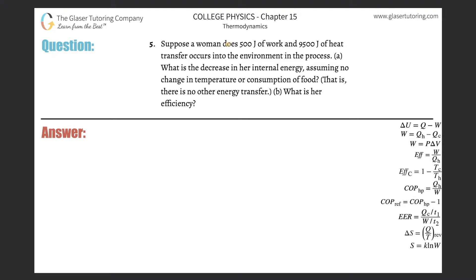Number five, suppose a woman does 500 joules of work and 9,500 joules of heat transfer occurs into the environment in the process, meaning she loses heat. What is the decrease in her internal energy, assuming no change in temperature or consumption of food?